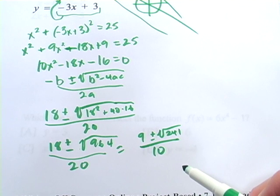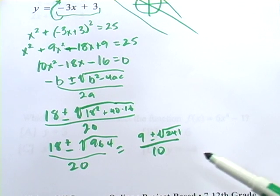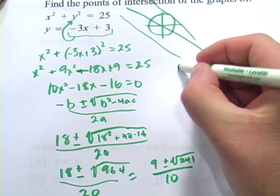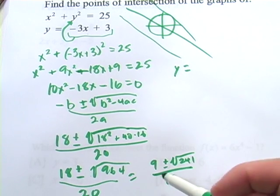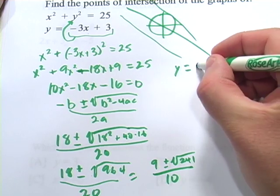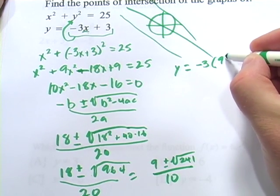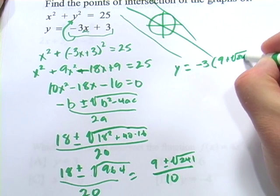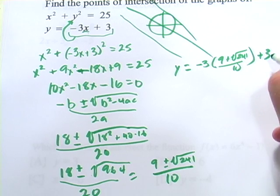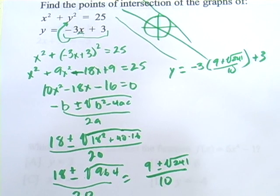If we want to find the points of intersection, we've got to find the corresponding points for y. And I think the way I would do that is take my x points and plug them back into this equation. So if x equals this, let's take 9 plus the square root of 241 over 10. Then y equals negative 3, just plug it in here, times 9 plus the square root of 241 over 10, plus 3. That's our formula for finding y there.